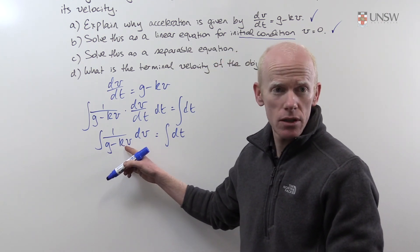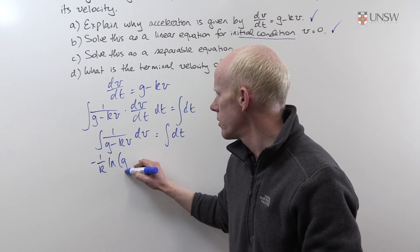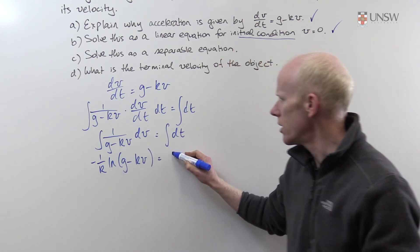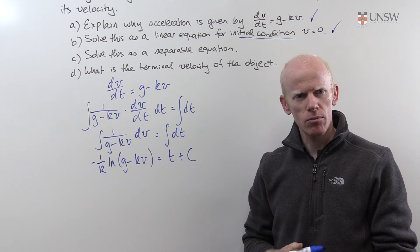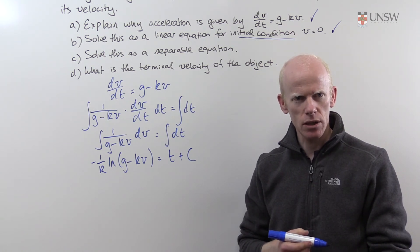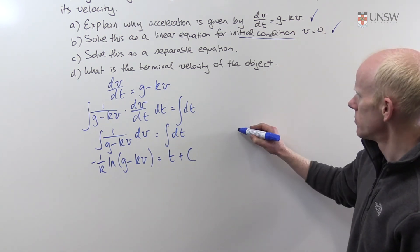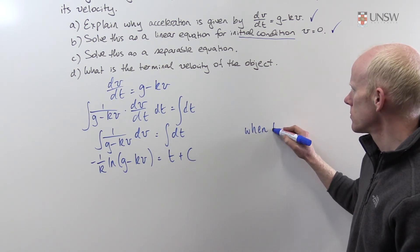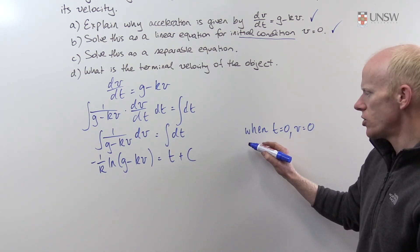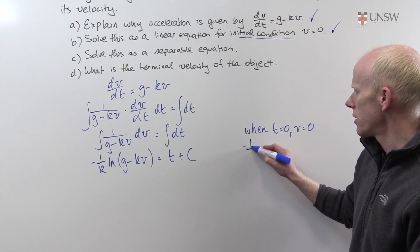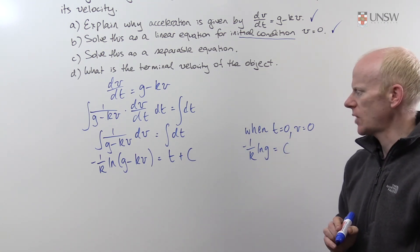The integral of this expression is a log function. So it's minus 1/k times log(g minus kv) equals t plus c. Just like in the previous question, I'm going to evaluate my expression for c straight away using the initial conditions. The initial conditions are the same as for the previous question: when t is 0, v is 0. Substituting into this equation, I get minus 1/k times log(g) equals c.